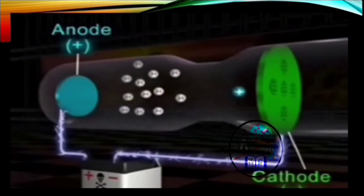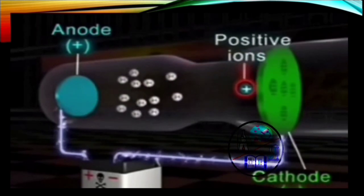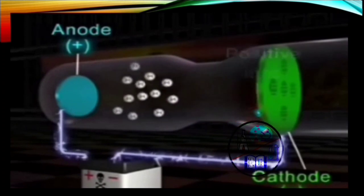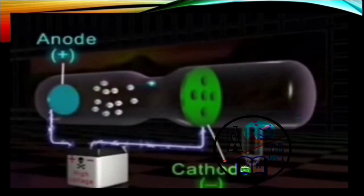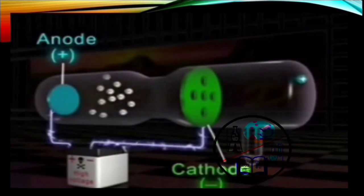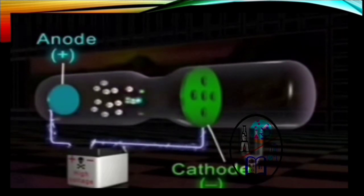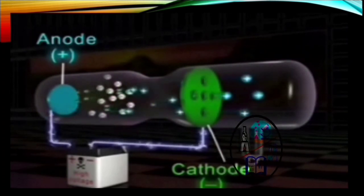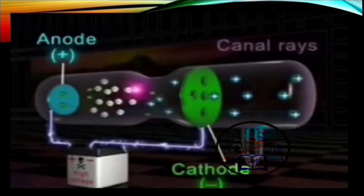The positive ions are all attracted to the negative cathode and some of them passed through the holes in the cathode. These are anode rays. By the time they reach the cathode, the ions have accelerated to a high speed and gained lots of energy. So, in order to return to their own energy level, the molecules release this extra energy and this energy gets emitted as light.